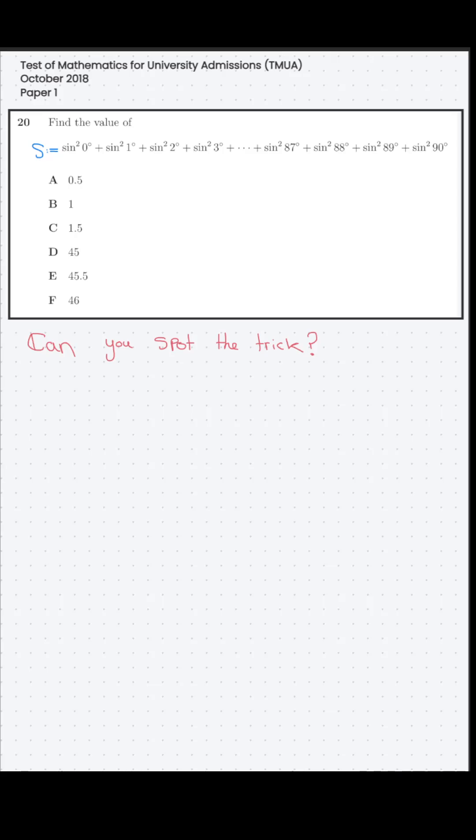Here we have a question from October 2018 TMUA paper 1, the final question on the paper regarding evaluating a sum which requires you to notice a trick and use two trigonometric identities. Can you do it?